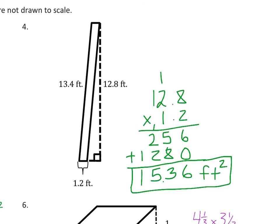For number 4, the 13.4 is irrelevant — we don't need it. What we care about is the base, which is 1.2 feet, and the height which comes 90 degrees from that base. We multiply 1.2 times 12.8 and get 15.36 feet squared, or 15 and 36 hundredths feet squared.